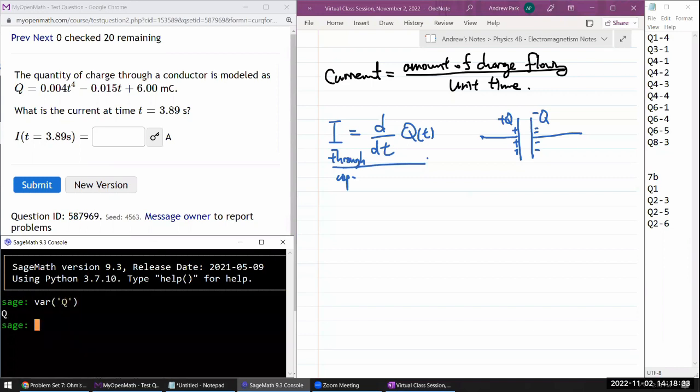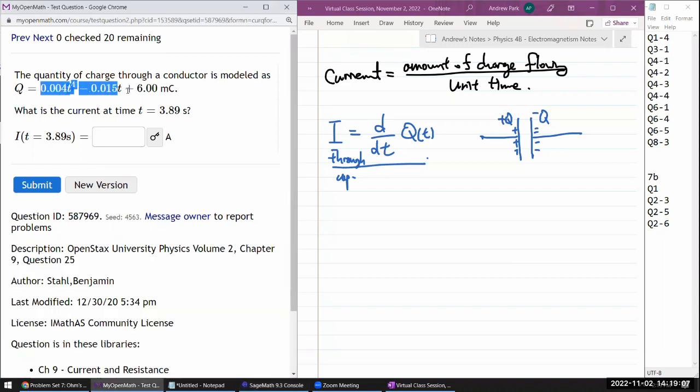And wait, I defined the wrong variable. Let me define time t. And I can say q being, let me just write out the function of time: 0.004 times t to the fourth power minus 0.015 times t plus a 6 millicoulomb. These are terrible units. So I think the way it's best understood is all of this is a quantity with a unit of millicoulomb. So I think that makes sense. Okay, so that's my expression for amount of charge.